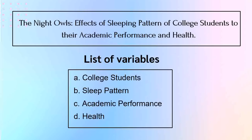In our example, our variables include the college students because we are going to study them. Now let's have the sleep pattern — titignan natin kung may effect ang sleeping pattern sa academic performance. Ibig sabihin, kasali din ang academic performance sa pag-aaralan natin, dahil ang academic performance ay isang variable na nakadepende siya sa sleeping patterns ng ating college students. At last but not least, health — titignan natin kung ano yung effect, are there any relationship or link between the sleeping pattern of college students sa health?